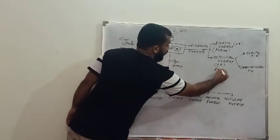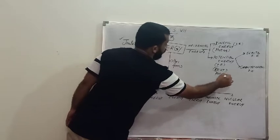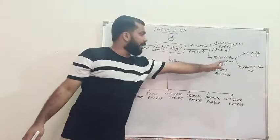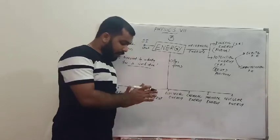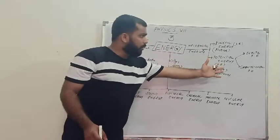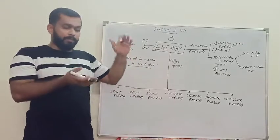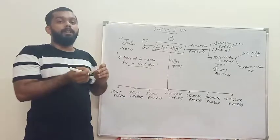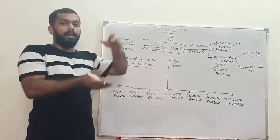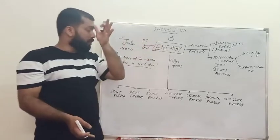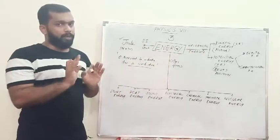The second type is potential energy. Potential energy is the energy possessed by an object due to its position or state of rest. In potential energy there are two types. First is elastic potential energy: if you stretch a rubber band or a spring and release it, it returns to its original shape. The energy stored in a stretched spring or rubber band is called elastic potential energy — they are at rest, not in motion.